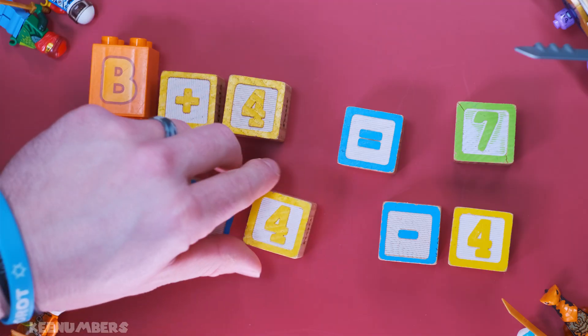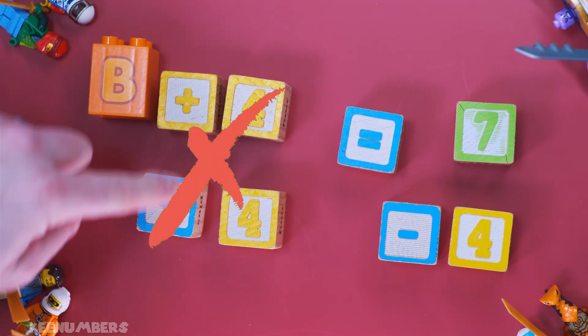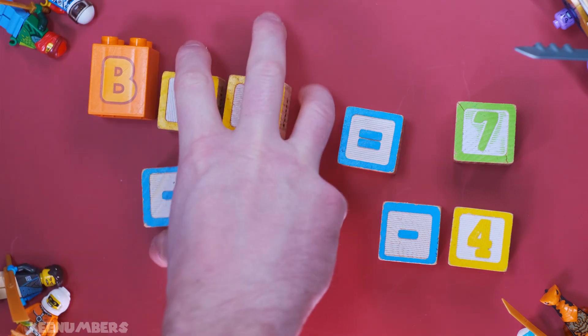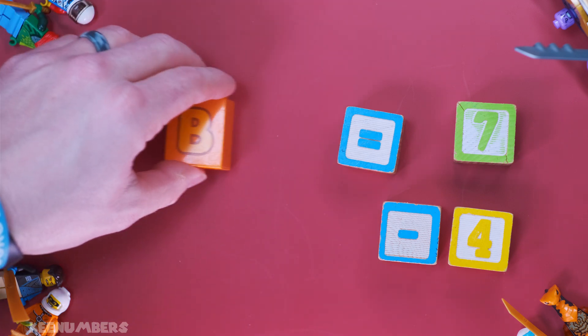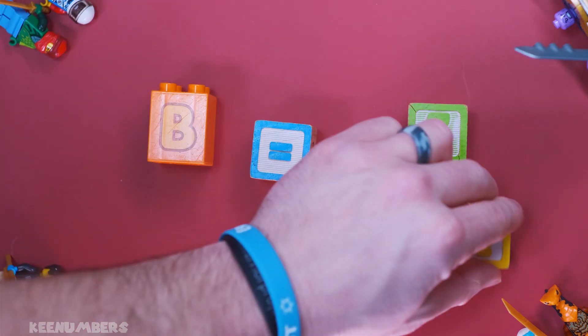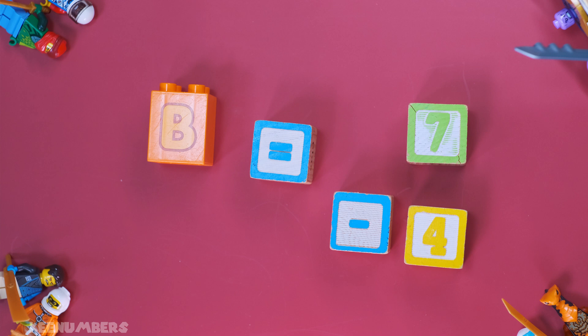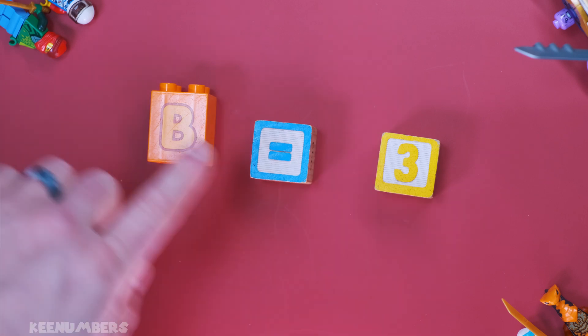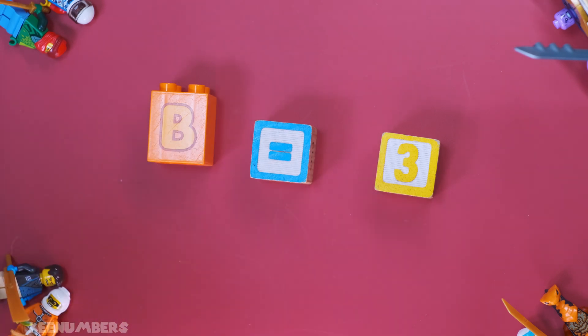So you have a big ol' whopping zero when you do four minus four, so get rid of those, and you just have B equals seven minus four. Well, you guys know what seven minus four is. It's three, so B is equal to three. Not a banana, it's equal to three. It's bananas.